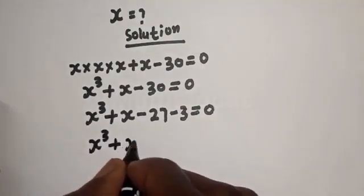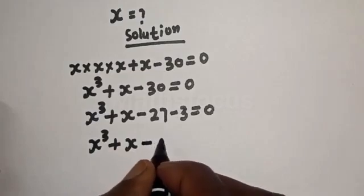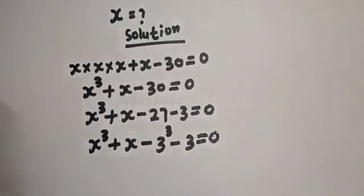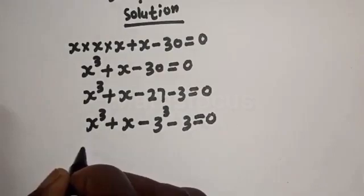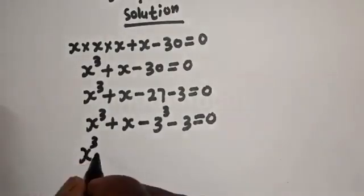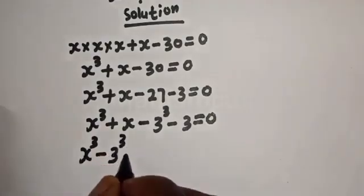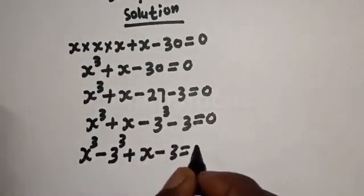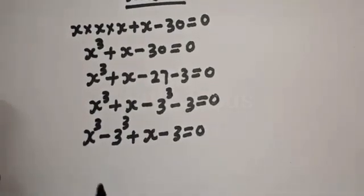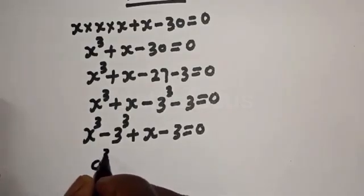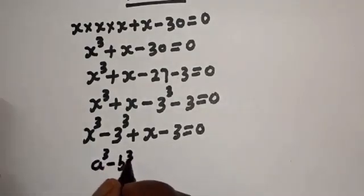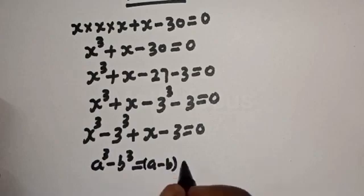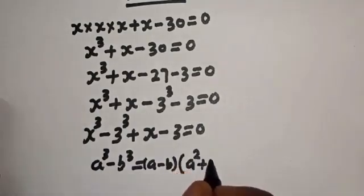Now, s cubed plus s minus 30 can be rewritten as s cubed minus 27, plus s minus 3, which equals 0. We apply the exponential rule: if you have a raised to power 3 minus b raised to power 3, this equals a minus b, bracket a squared plus b squared plus ab.